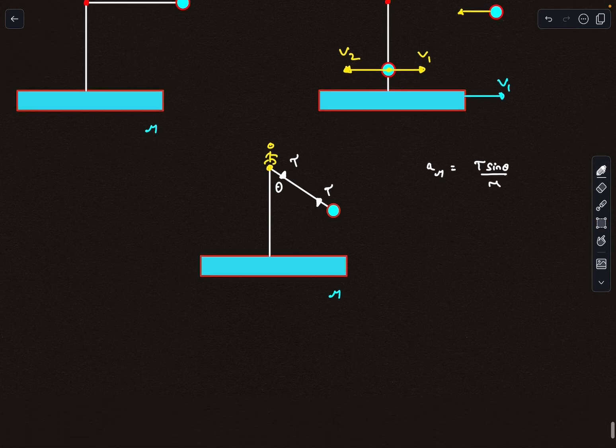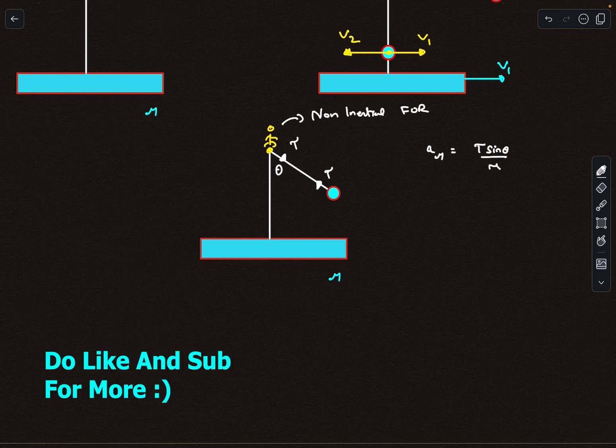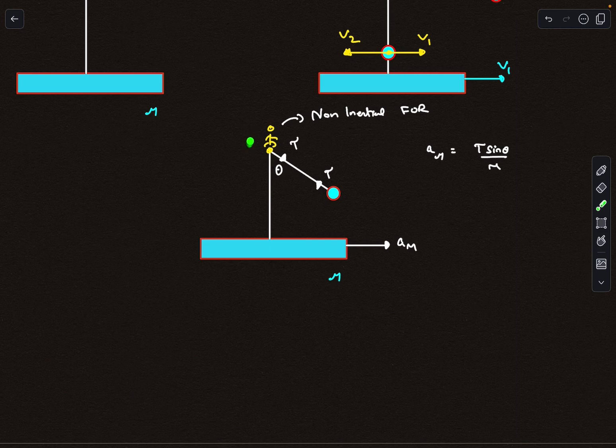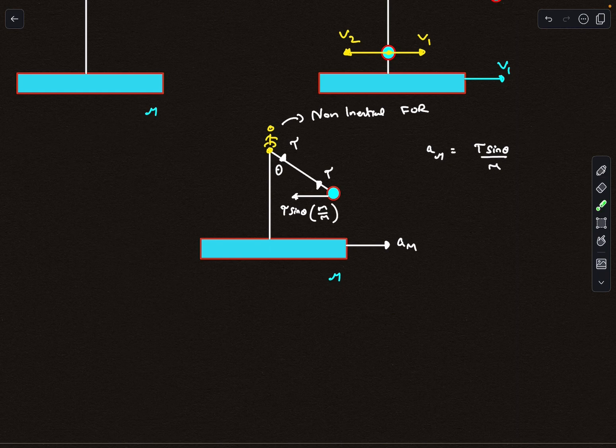We are taking the frame of reference as the platform. Now this guy is sitting in a non-inertial frame of reference; it is being accelerated to the right with acceleration AM. If this guy wants to write F equals MA, then he has to apply a pseudo-force on all the masses present here. The magnitude of the pseudo-force is T sin theta times small m by capital M.